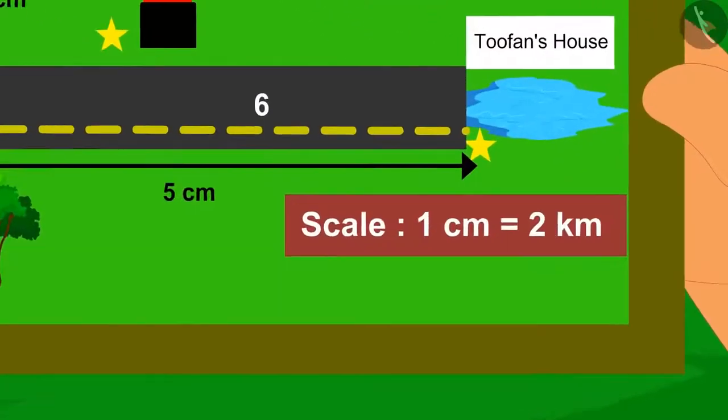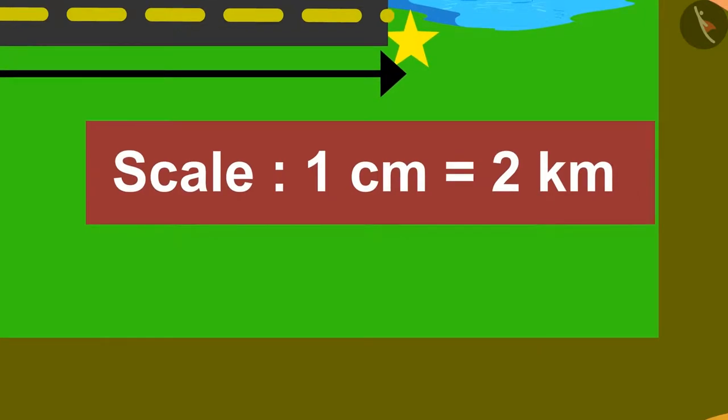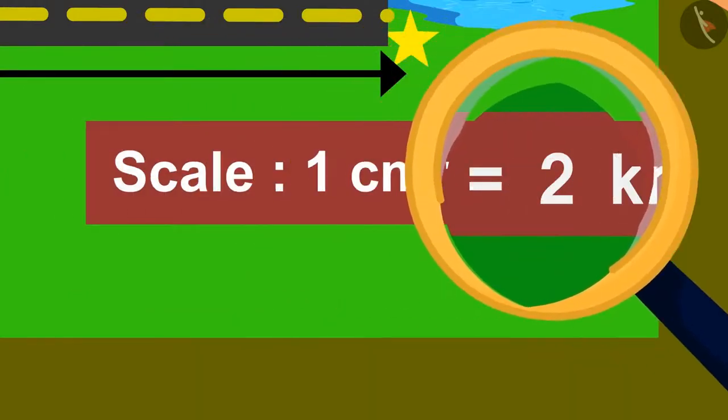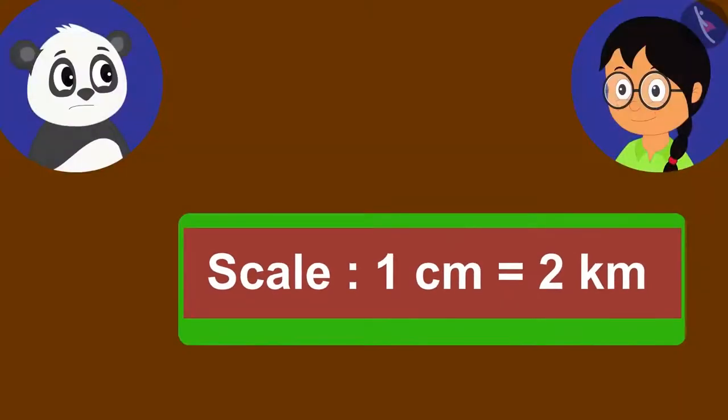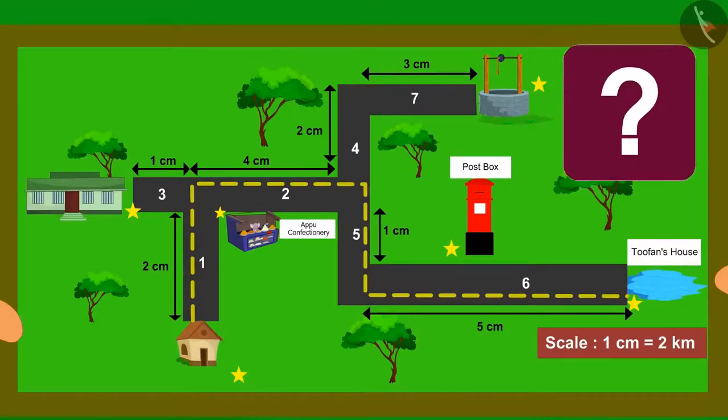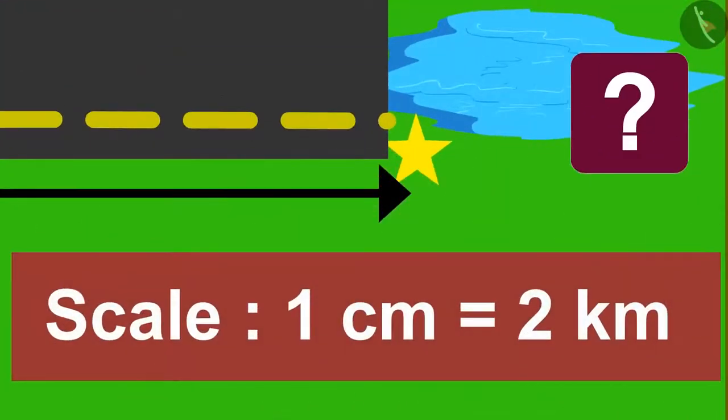Meenu then draws Golu's attention to the scale written on the map. On the scale, it was written 1 cm equals 2 km. What is this? Is this a scale? What is a scale? Children, have you seen a map? Do you know about the scale on the map?